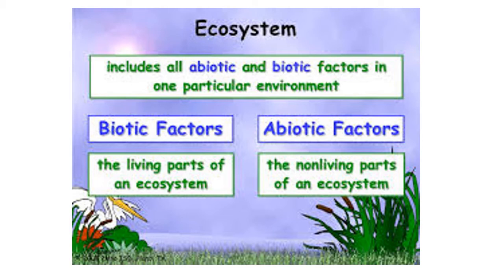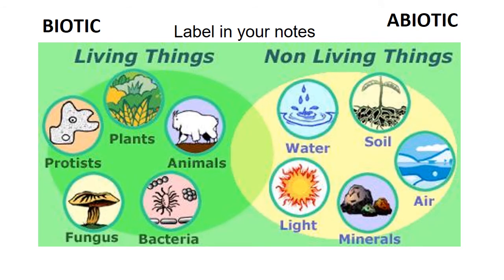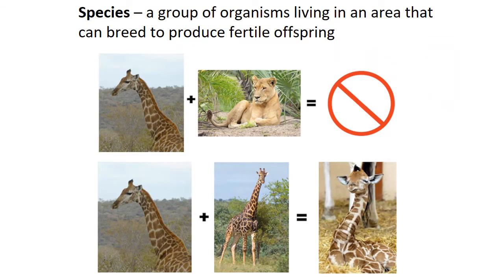The ecosystem includes both the biotic and the abiotic. Biotic refers to living things — plants, animals, bacteria, fungus, protists. Abiotic means without life, so it's the non-living things: water, soil, air, minerals, and light. It's true that the biotic cannot live without the abiotic, but that still doesn't mean the abiotic itself is alive.